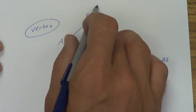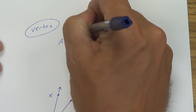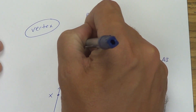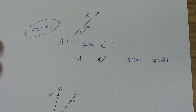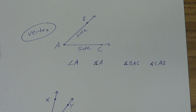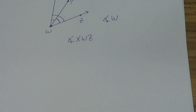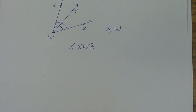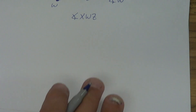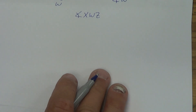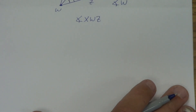Now, these rays are called the sides of the angle. Ray AC is one side and ray AB is the other side of the angle. So a couple terms there dealing with angles. Now, you probably are familiar with these terms, but we talked about classifying angles.